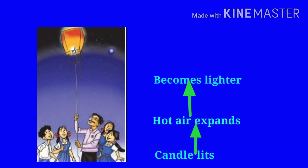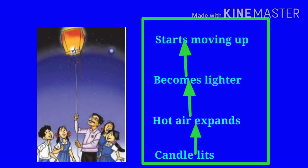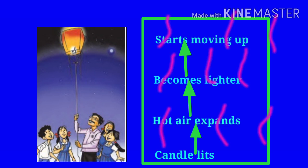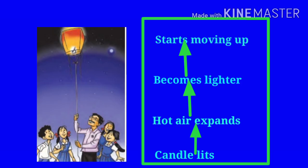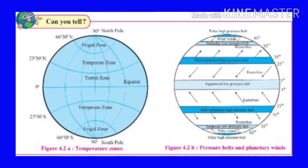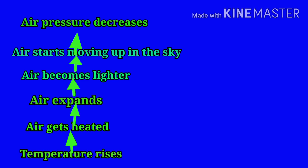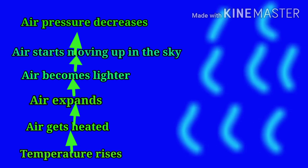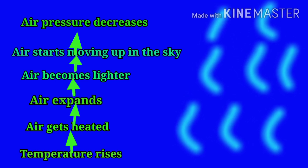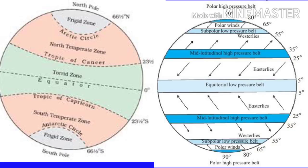Geographical explanation: The air in the flying lantern gets heated once the candle is lit. The hot air expands, becomes lighter, and starts moving up — therefore the lantern is also lifted up towards the sky. In nature, a similar phenomenon occurs. Temperature and air pressure are closely related. Wherever the temperature is high, the air pressure is low. As temperature rises, the air gets heated, expands, and becomes lighter, and this lighter air starts moving up towards the sky. As a result, the pressure in such areas decreases.